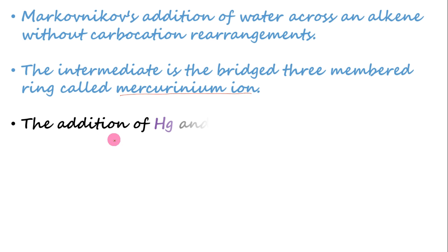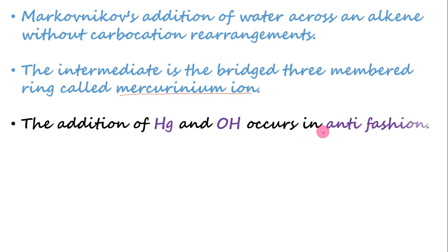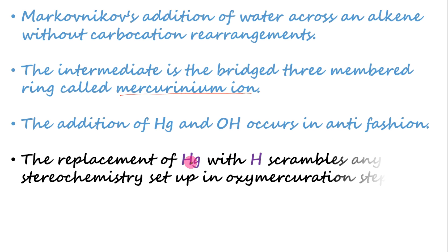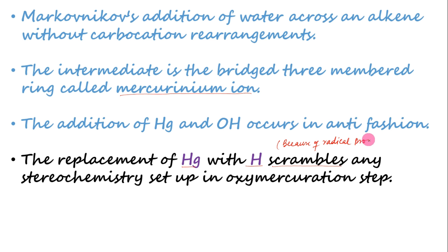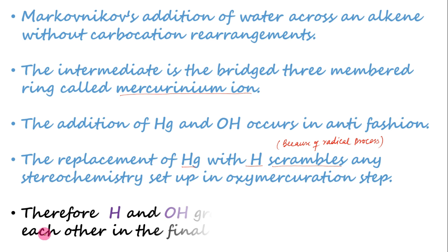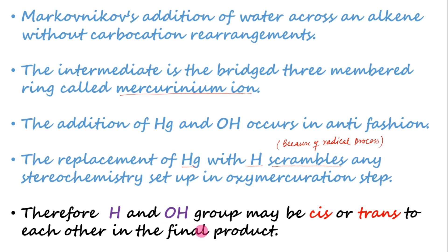Third, the addition of Hg and OH occurs in anti fashion. Fourth, any stereochemistry set up in the oxymercuration step — that is, the Hg and OH anti-arrangement — is scrambled by the demercuration step. Fifth, therefore H and OH may be cis or trans to each other in the final product.